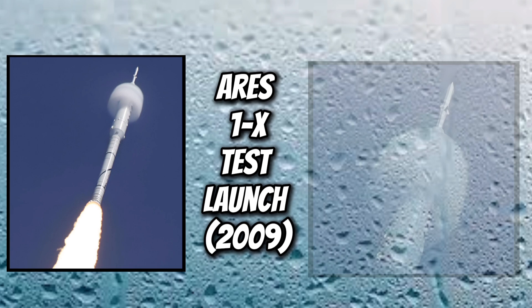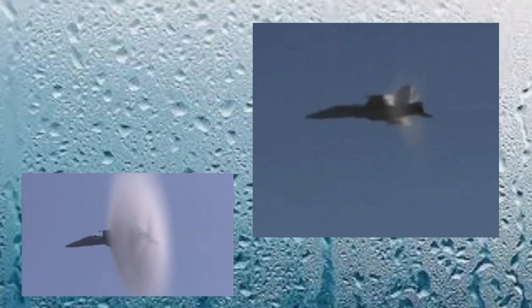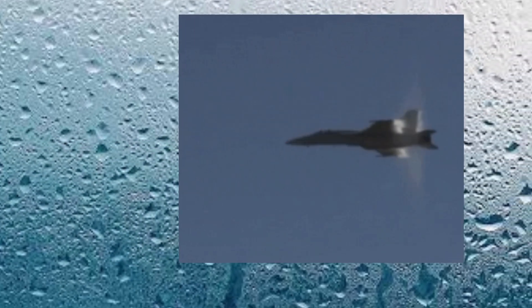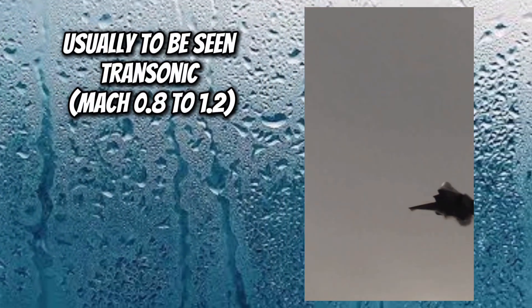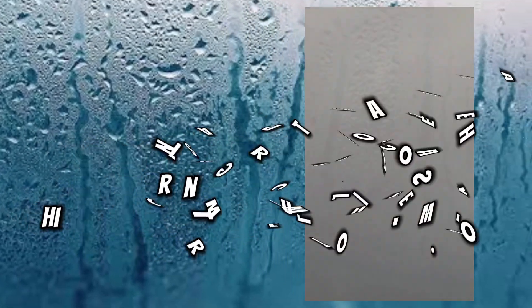Vapor cone appears as a white halo or cloud around the aircraft, often near the tail or wingtips. Its exact shape and size can vary depending on the aircraft's speed, altitude, and atmospheric conditions. The cone is most commonly seen when the aircraft is traveling at transonic speeds, but can also appear at supersonic speeds in the right conditions.